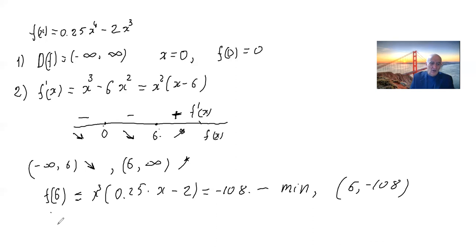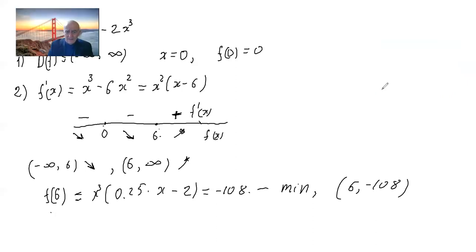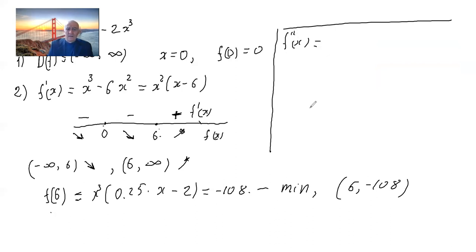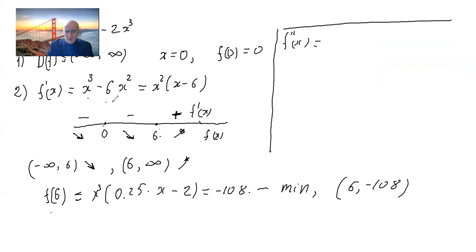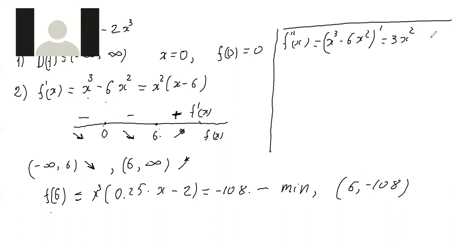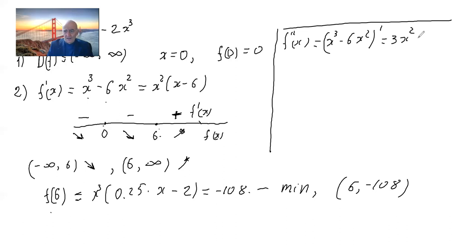The next step is to find the second derivative of the function. The second derivative of f(x) equals x³ minus 6x² is 3x² minus 12x.